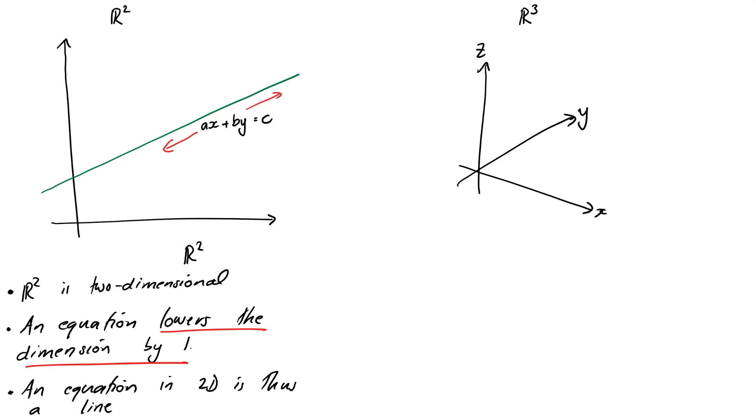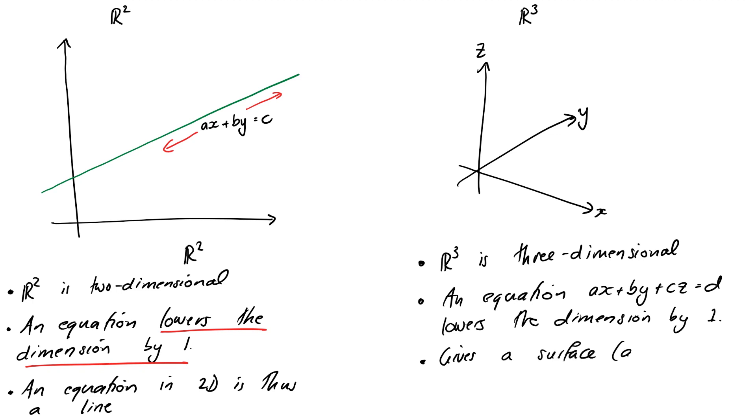Alright, so in 3 space, an equation like AX plus BY plus CZ equals D takes away one degree of movement. So that means we must be left with a two-dimensional object once we have a single equation. And it turns out this equation is in fact a plane, and we'll see why shortly. Alright, if you need to, pause this video and take a breather for a second. It can take a while to get your head around these ideas, so just take a break, get a drink of water. We're going to start looking at actual equations for planes in 3D next to come down to Earth just a little bit.